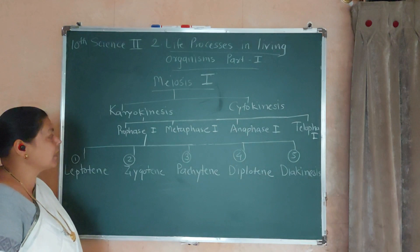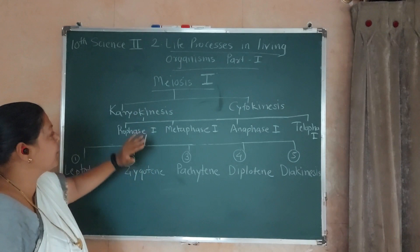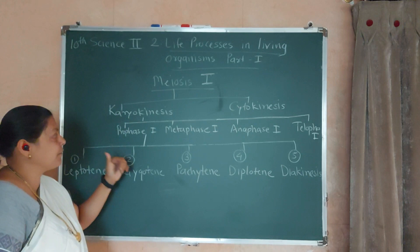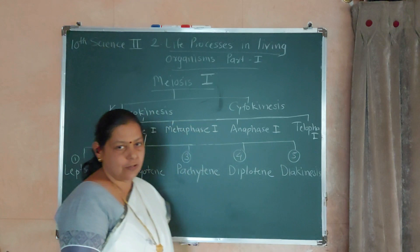We have already discussed in mitosis that some steps are involved: prophase, metaphase, anaphase, telophase. But here in meiosis 1st, the karyokinesis steps are a little different. Instead of prophase, it is prophase 1st. In meiosis 1st karyokinesis, we have prophase 1st, metaphase 1st, anaphase 1st, and telophase 1st.